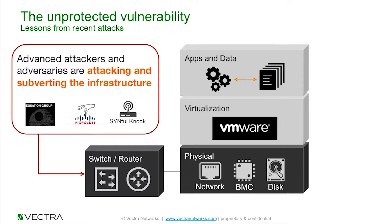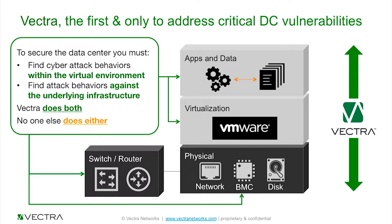This is what we see from really advanced attackers — things like we've seen from the recent dump around the Equation Group: PixPocket, and Sinful Knock a bit further back, a sub-operating system rootkit that allowed attackers to take control of infrastructure. This is critically important because not only do we need to be looking for the right things in the virtualized layers, but if we can't recognize when the physical infrastructure has been compromised, then anything we do in the layers above it becomes moot.